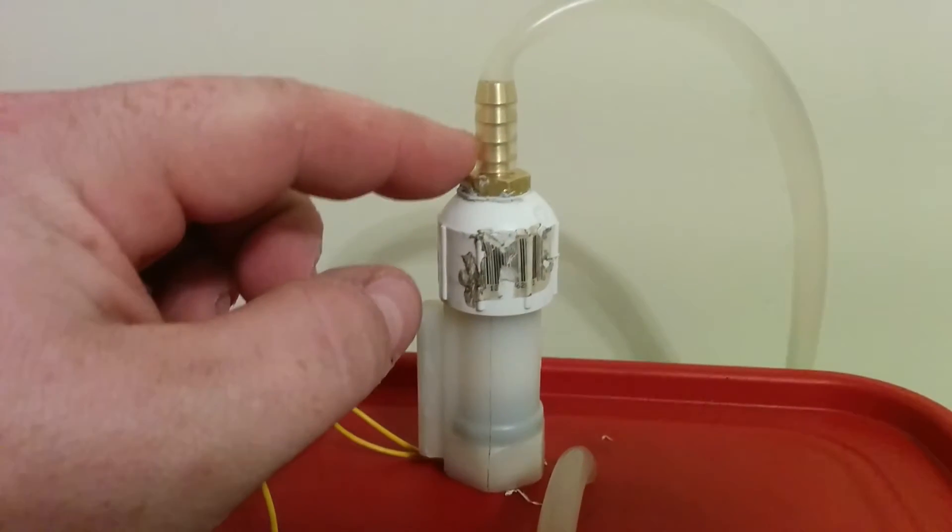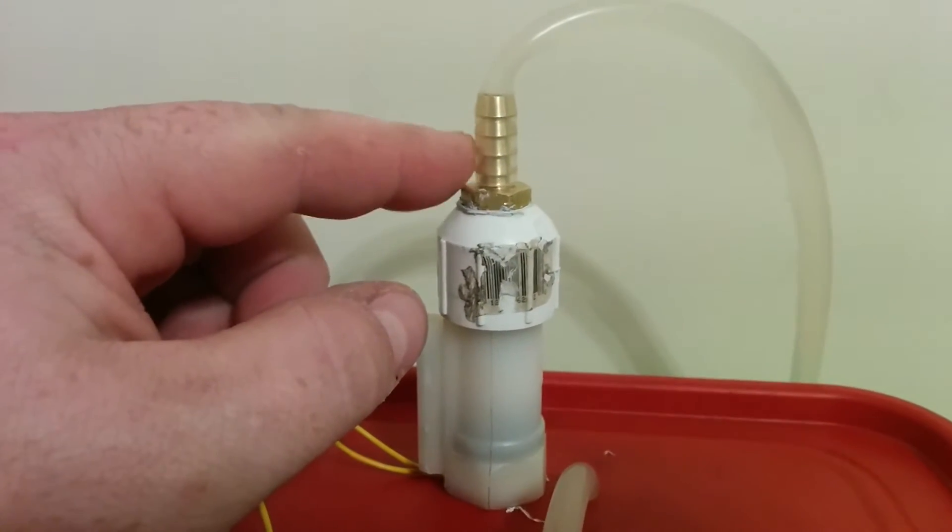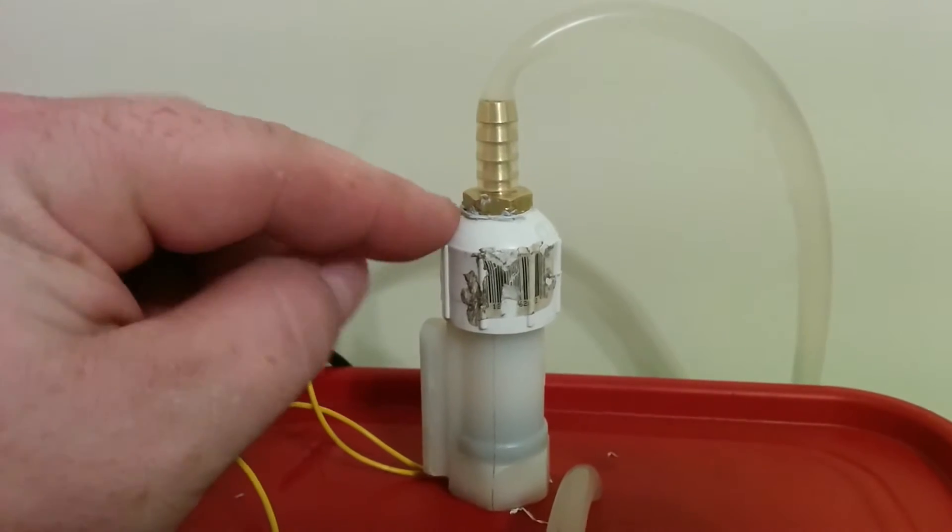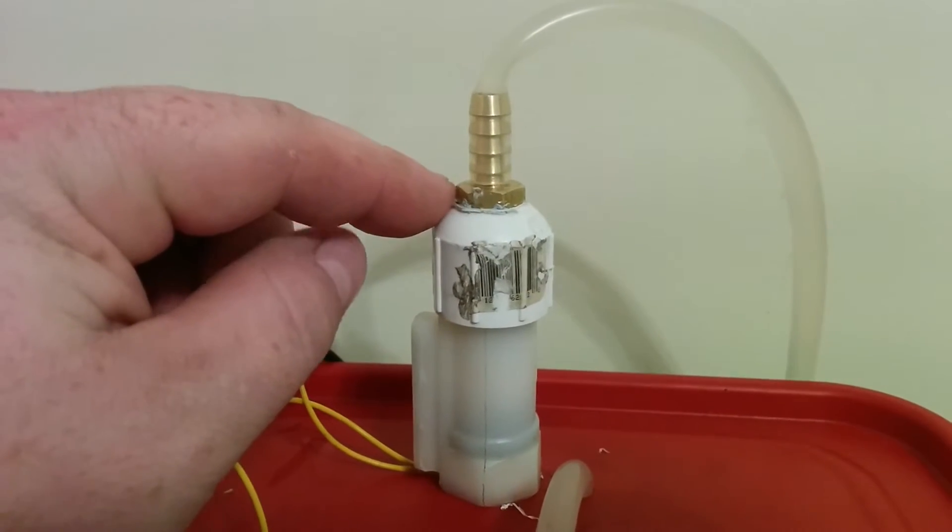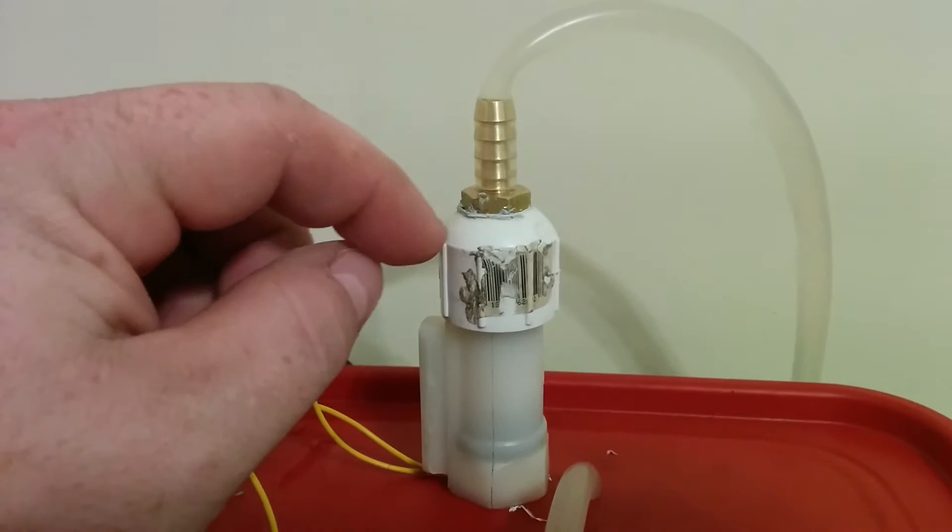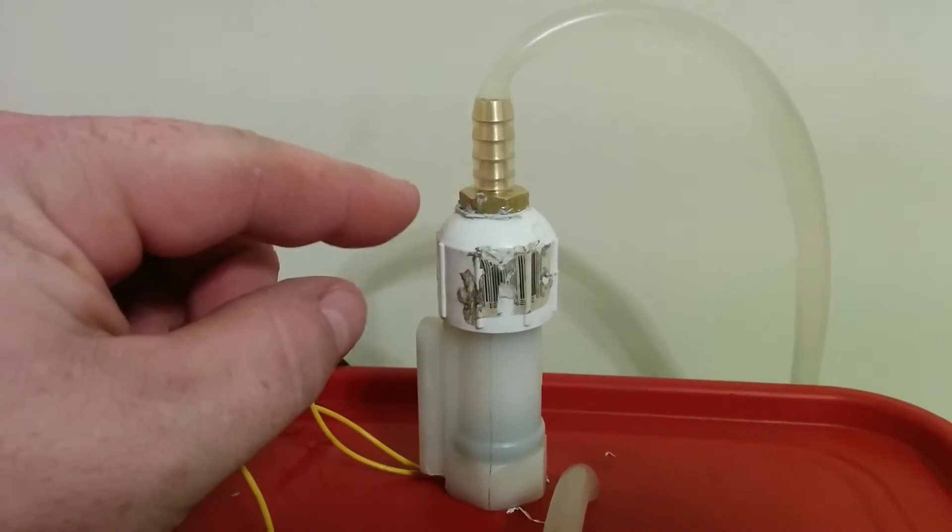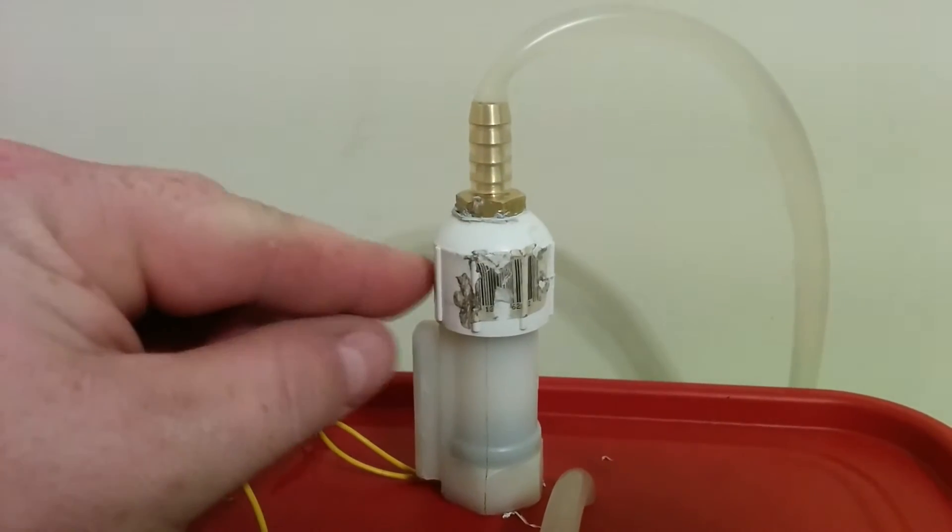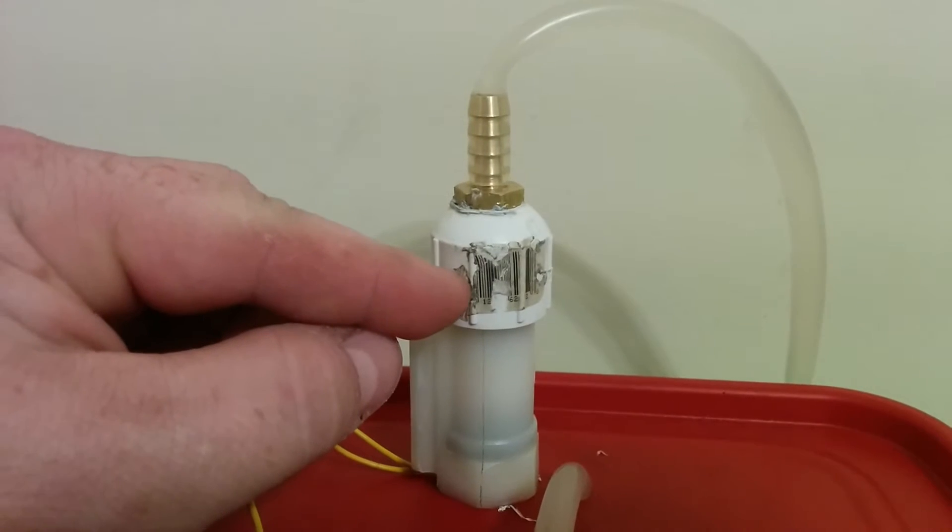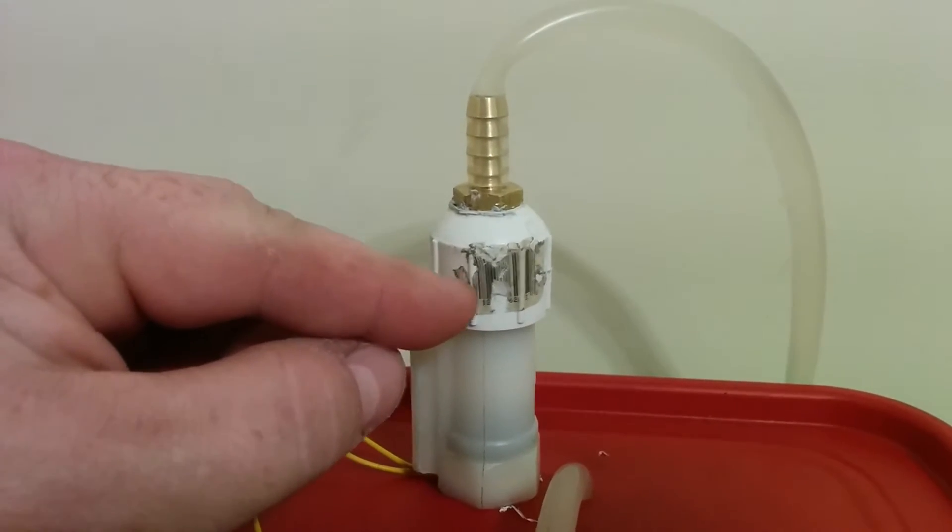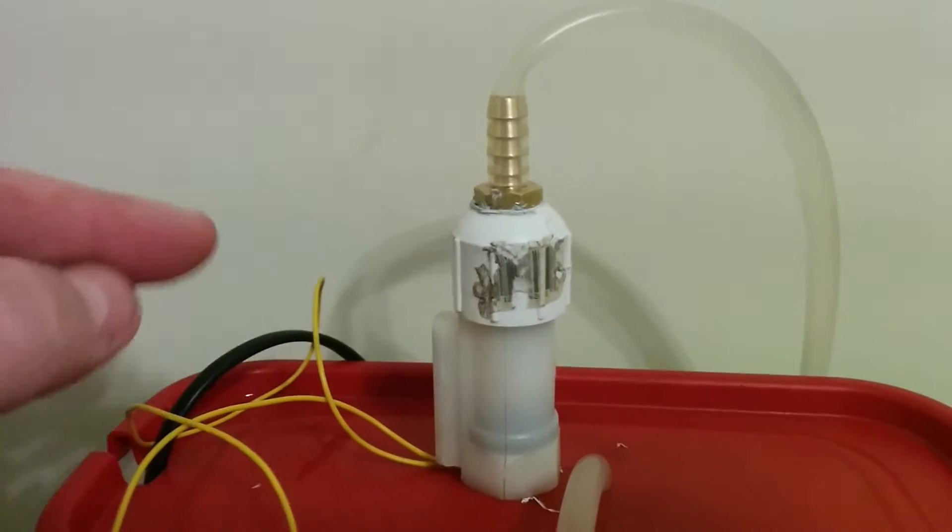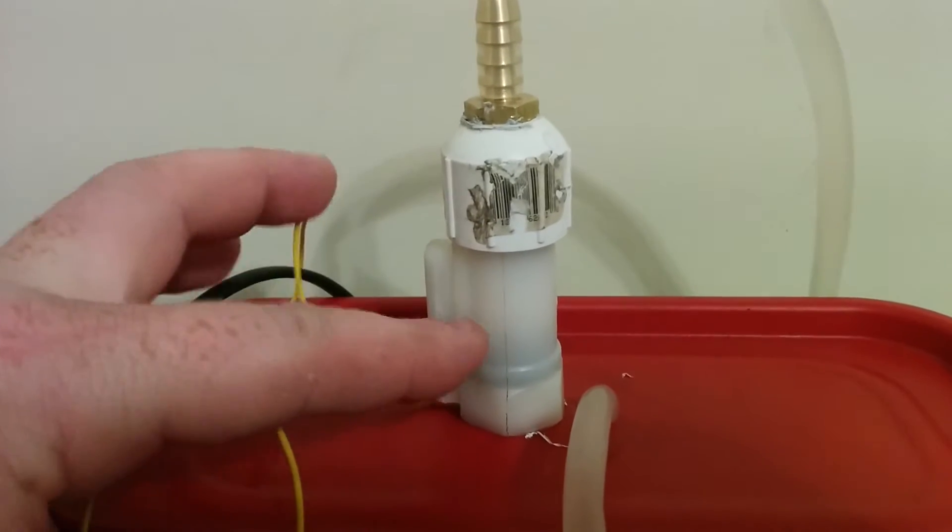The hose plugs into a barbed connector. This is a quarter-inch barbed connector that has a 3-eighths male. That's then, I tapped it into a half-inch cap, half-inch threaded cap.